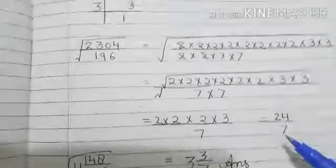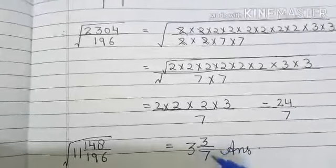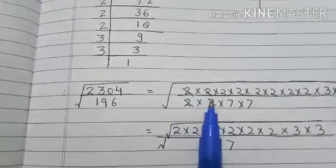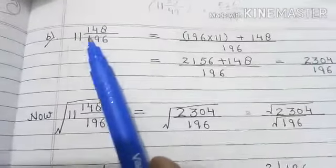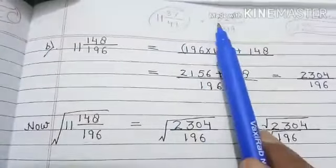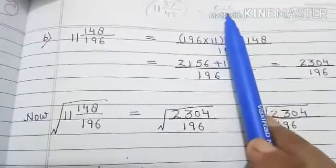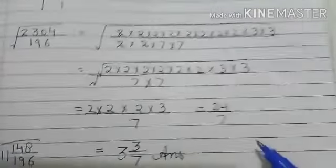So it comes to be 24 by 7. When you write it into mixed form, this will become 3 whole 3 by 7. In this question also, class, as the numbers are coming common here, it means it can be reduced earlier also. So if you will see, class, when you reduce it, both the numbers can be divided by 4 here. When you divide it by 4, you get 11 whole 37 by 49, and when you multiply, you get 576 by 49. And if you know that 576 is the square of 24, you can write it directly as 7. Everyone knows, so directly you can write the answer 24 by 7. So it will be very easy.